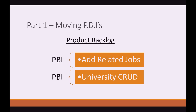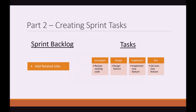Let's take an example. Imagine that this is our Product Backlog and it has two Product Backlog Items in it. Let's take the first one — Add Related Jobs. The Product Owner would like a Related Jobs block added to the Jobs page. This takes us to Part 2, and we have moved the Add Related Jobs PBI to our Sprint Backlog. This is a new feature that the team is going to have to build.